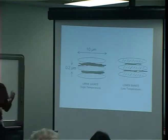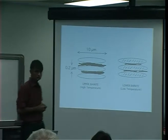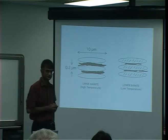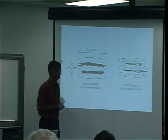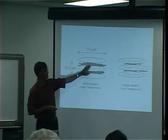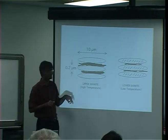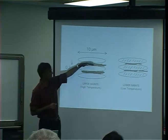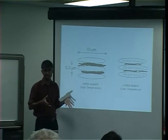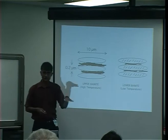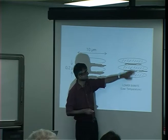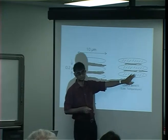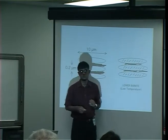The difference between upper and lower bainite — a microstructural classification which is extremely well established — is that when bainite forms at a relatively high temperature, the plates of ferrite are completely free of carbides and instead you get cementite precipitation in between the plates. As you lower the transformation temperature, you also precipitate cementite or carbides inside the plates as well as between the plates.